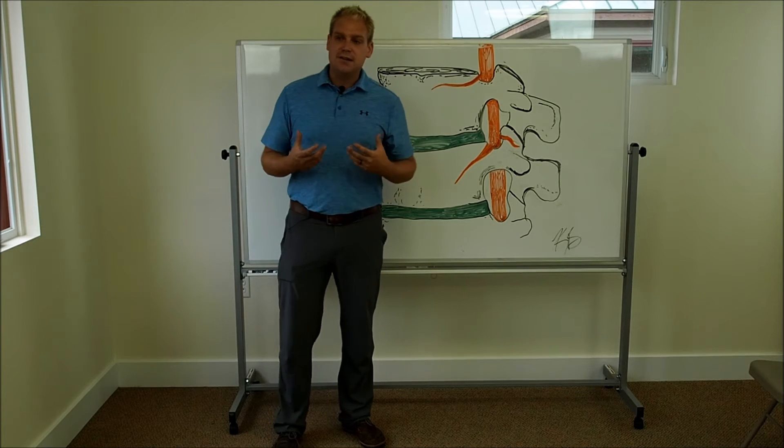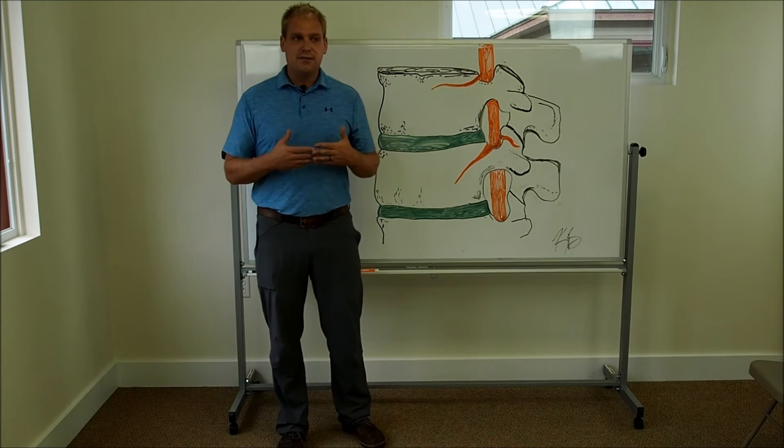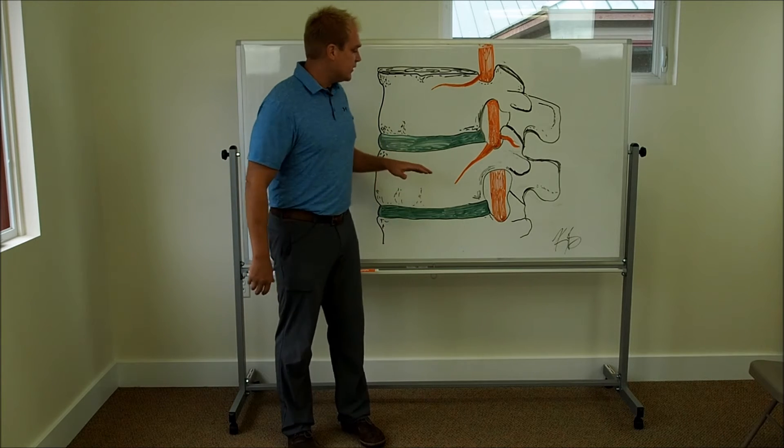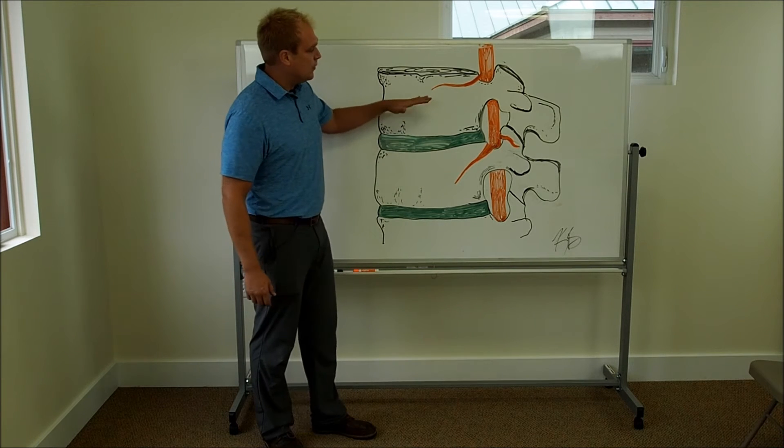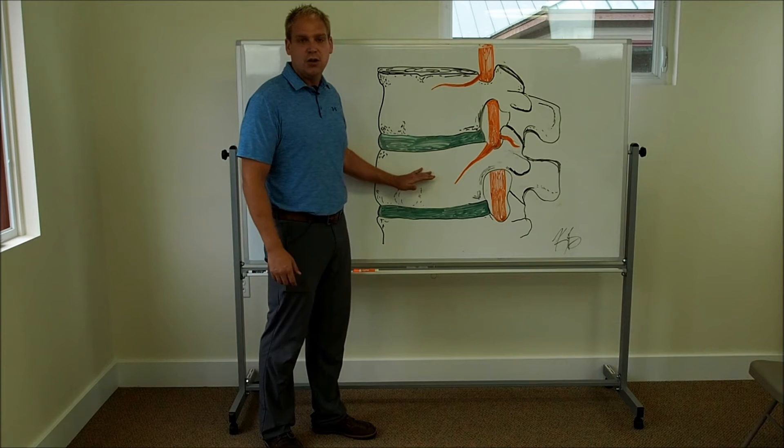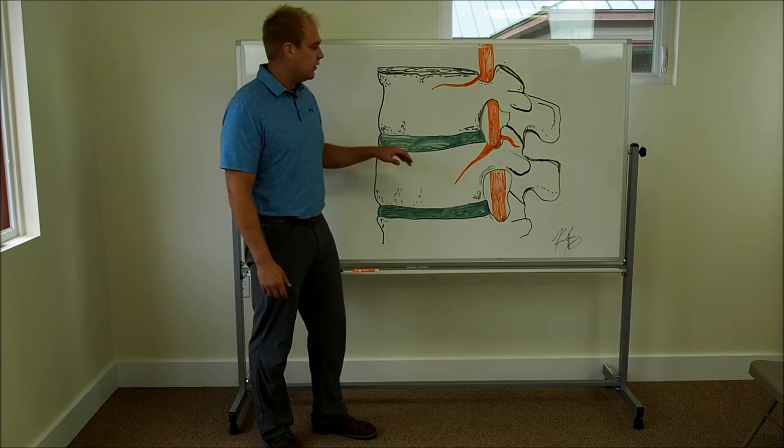So first, we must identify what is the sciatic nerve and where does it come from. You can see here, this is segment number one and segment number two of the lower back. There's five segments in total.